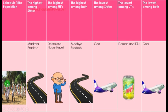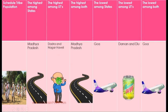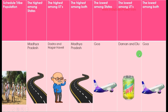Here we have taken a base image. The highest among states is Madhya Pradesh, and the highest among UTs is Dadra and Nagar Haveli — code: 'Dada Chai'. The lowest among states is Goa — code: 'Goa Aways'. The lowest among UTs is Laman and Dew.